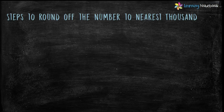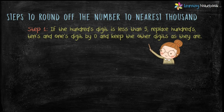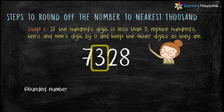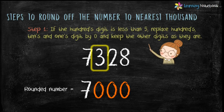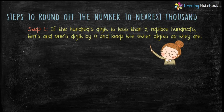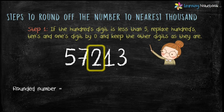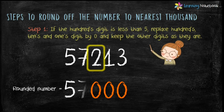Let's see the steps to round off a number to the nearest 1000. Step 1: if the hundreds digit is less than 5, replace the hundreds, tens, and ones digits by 0 and keep the other digits as they are. For example, the rounded number is 7000. Let's see another example: 57213. Here the hundreds digit is 2, which is less than 5. So replace 2, 1, and 3 by 0 and keep the remaining digits as they are. The rounded number is 57000.